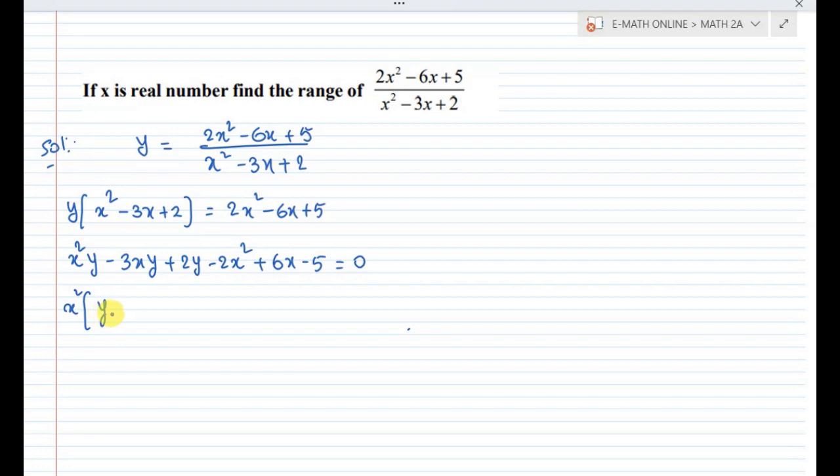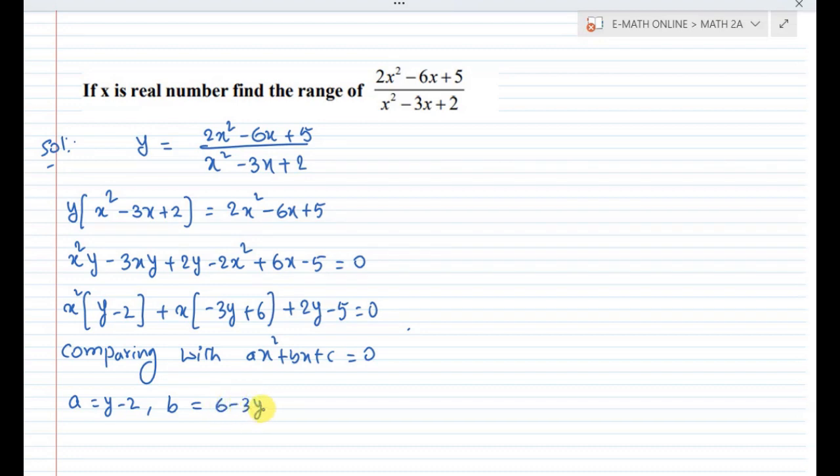Taking x square common: x square times (y minus 2) plus x times (minus 3y plus 6) plus 2y minus 5 equal to 0. Comparing with ax square plus bx plus c equal to 0, a equals y minus 2, b equals 6 minus 3y, and c equals 2y minus 5.